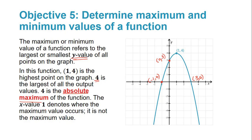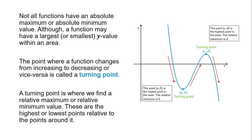The x value of 1 denotes where the maximum value occurs — it is not the maximum value itself. The maximum value must be the y value. Not all functions have an absolute maximum or an absolute minimum, although they may have a largest or smallest y value within a region. We call these relative maximum or minimum points. The point where a function changes from increasing to decreasing or vice versa is called a turning point, and a turning point is where we find a relative maximum or relative minimum value.